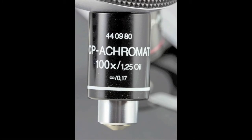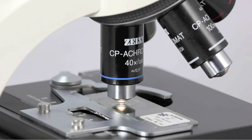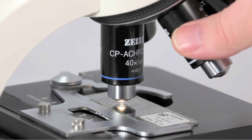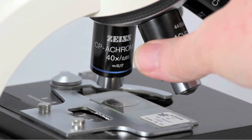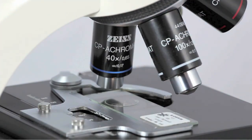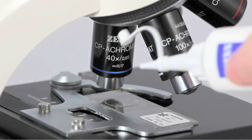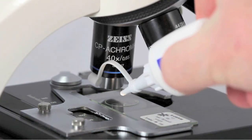The oil immersion lens requires special procedures. Once you have focused and centered with the high-power objective and adjusted the light, then rotate the high-power objective out of the way and place a drop of oil in the center of the slide.